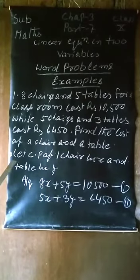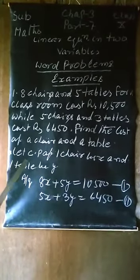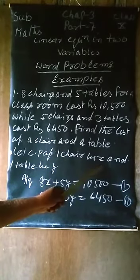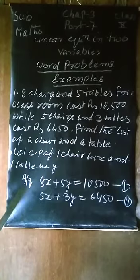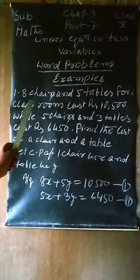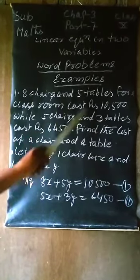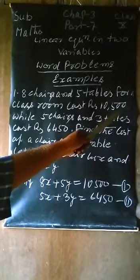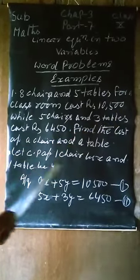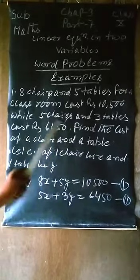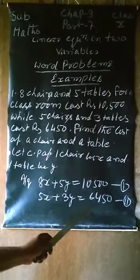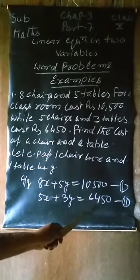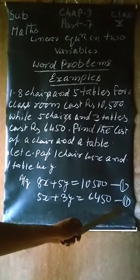Now the solution starts here. Let cost price of 1 chair be x and 1 table be y. Then according to the question, 8x plus 5y equals 10,500. This is the first equation. Second equation: 5x plus 3y equals 6450. This is equation second.